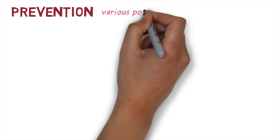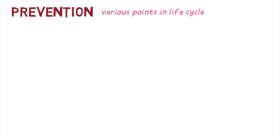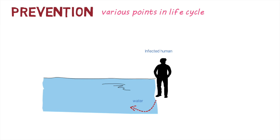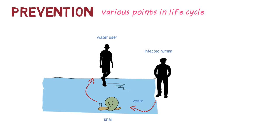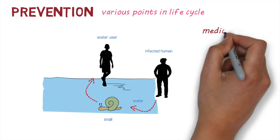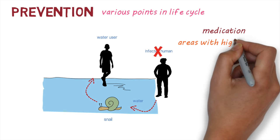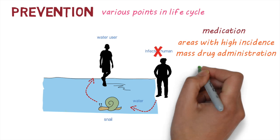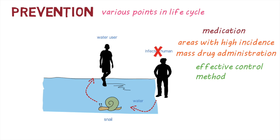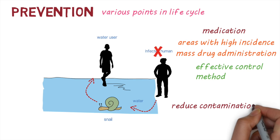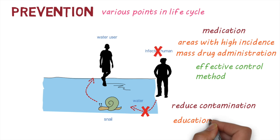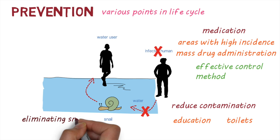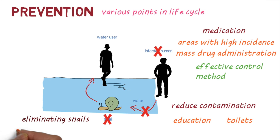Preventing the disease can occur at various points in the worm's life cycle. The spread of schistosomiasis requires an infected human who contaminates the water, a snail, and subsequent contact with another human who uses the contaminated water. The disease can be eliminated in humans using medication. In areas with a high burden of disease, entire communities or targeted at-risk groups can be treated to reduce incidence. Large-scale drug treatment has been an effective way to control schistosomiasis. Another approach is to reduce water contamination through educating people on proper sanitation and providing necessary facilities such as toilets. Some countries have tried to eliminate snails using chemicals or biological control methods, though their effectiveness has been variable.